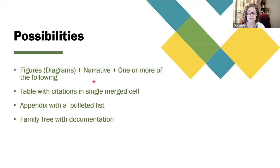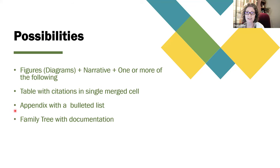Some of the different things you could do: you could have a table with all of the citations in a single merged cell — this might work if you didn't have a huge diagram. If you do have a very large diagram with a lot of links to show, maybe you have an appendix with a bulleted list for all the documentation, or perhaps you direct your readers to a family tree with all that documentation. So those are some specific ways you could handle this.